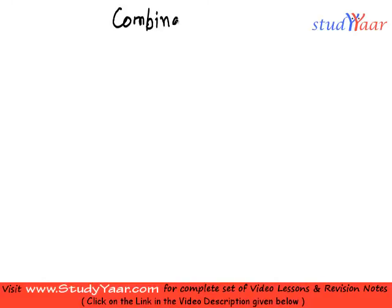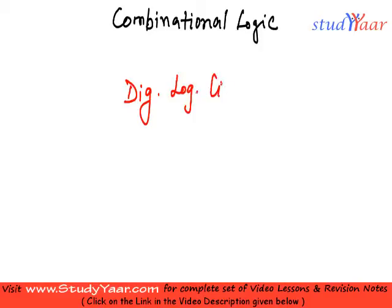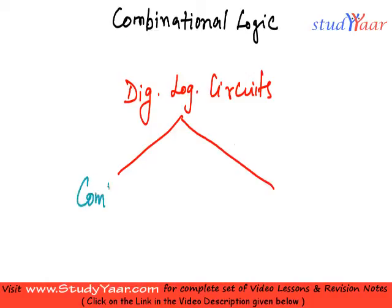In this session we are going to talk about combinational logic. Our digital logic circuits are basically of two types. These types are combinational and sequential. I have combinational over here and I have sequential over here.